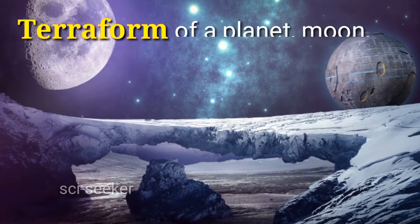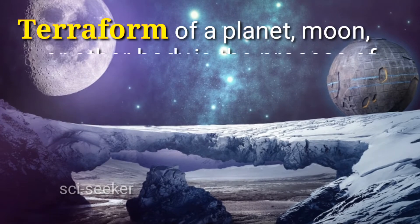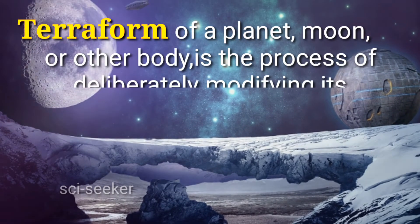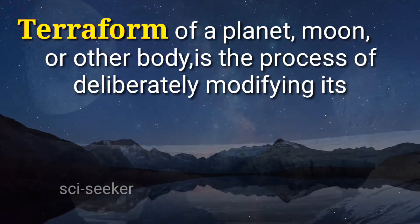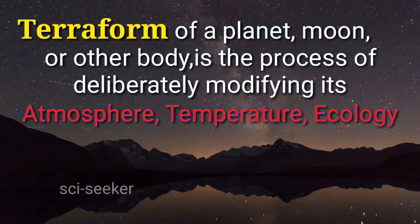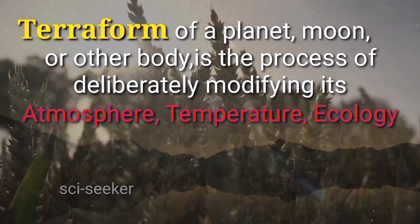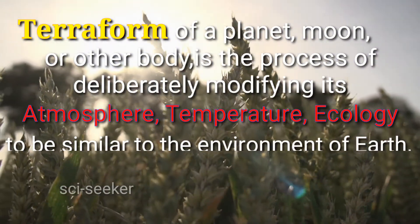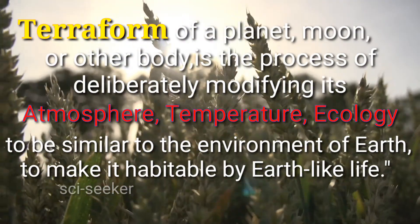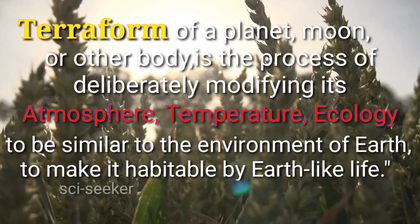Terraforming of a planet, moon, or other body is the process of deliberately modifying its atmosphere, temperature, and ecology to be similar to the environment of Earth, to make it habitable by Earth-like life.